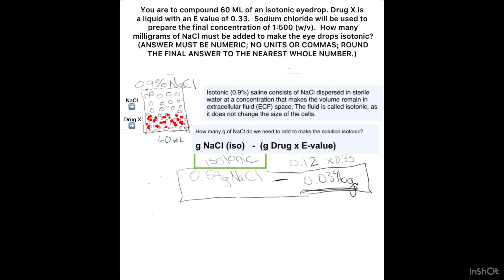500 milligrams should be the answer. That's the correct answer. 500 milligrams of sodium chloride are needed to add to the solution to make the solution isotonic.